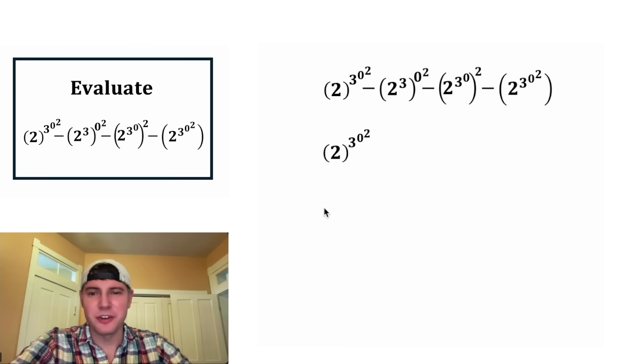Let's focus on this term first. Anytime you have a power tower, you work from the top down. So we're going to focus on the zero squared first. Zero squared is equal to zero. Then we're going to do the three to the zero, and anything to the zero power is one. Now we have two to the one, which is two. So this whole first term simplified to two.